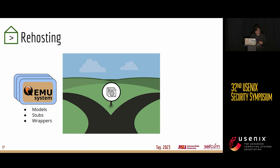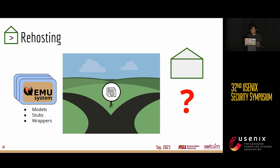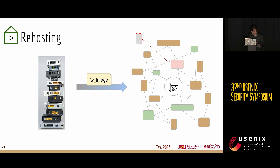Existing works on emulation have noticed this problem and come up with a variety of automated solutions using models, stubs, wrappers, et cetera, to substitute these components with more generalized approaches. These approaches inherently recognize that you don't need a perfectly accurate emulation environment to get a successful re-host. This led us to think: what if we took this concept a bit further — what if we sacrificed some emulation accuracy for better re-hosting and went a bit further with that idea?